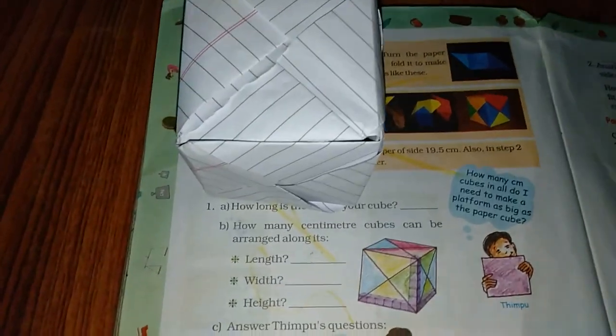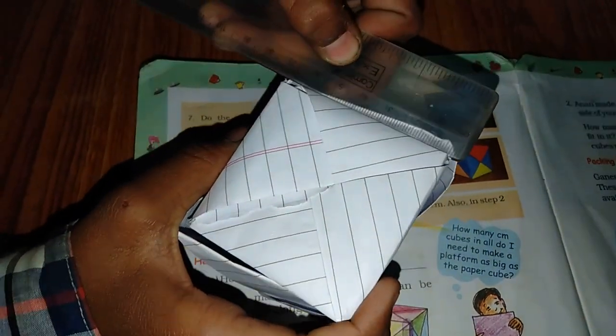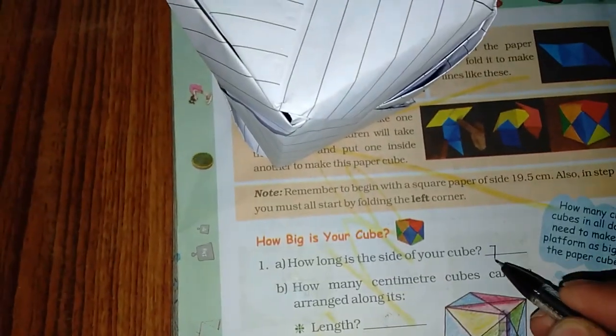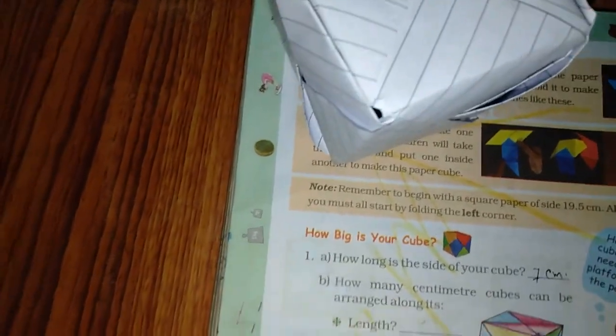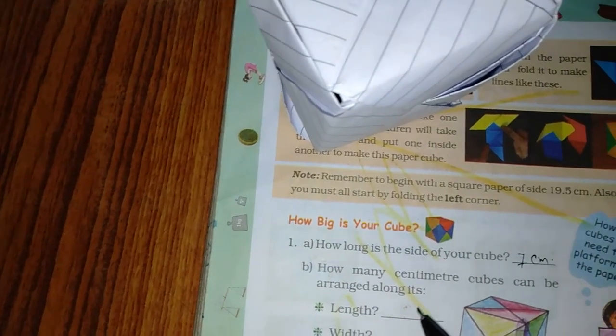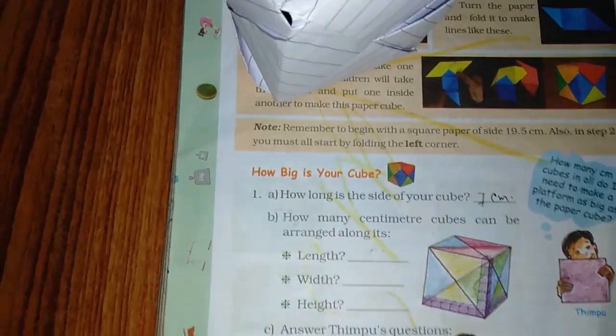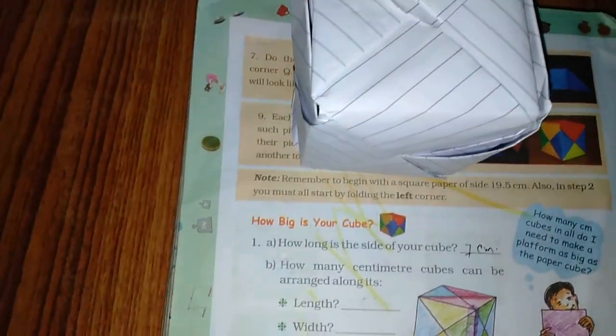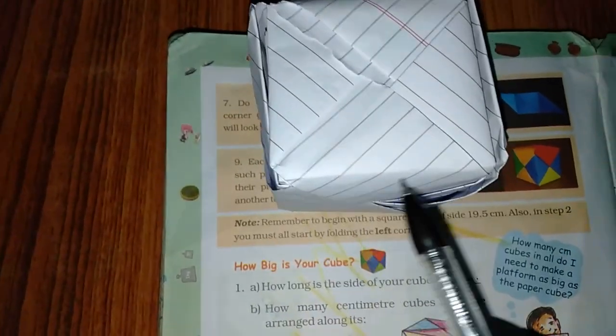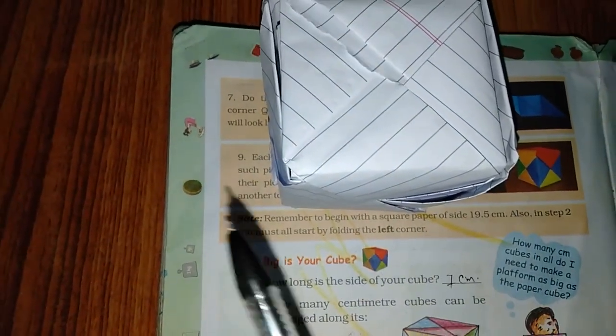Now let's see, how many centimeter cubes can be arranged along its length? We have dice—if we add dice on one side, then how many will there be?